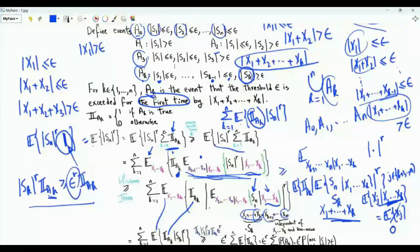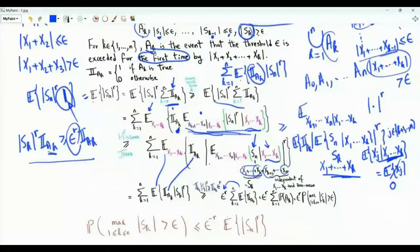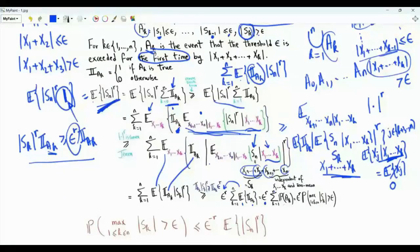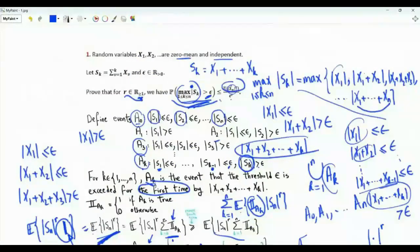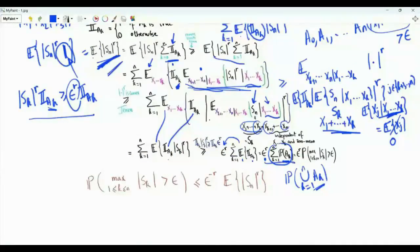Since epsilon^r is a constant, it can be taken outside the expectation and the sum. The expectation of indicator A_k is the probability of event A_k. We obtain a lower bound: epsilon^r times the sum from k=1 to n of P(A_k). This summation is P(union of A_k for k=1 to n), which is exactly the probability that max|S_k| > epsilon. Dividing both sides by epsilon^r gives the inequality of interest.